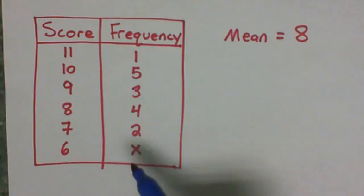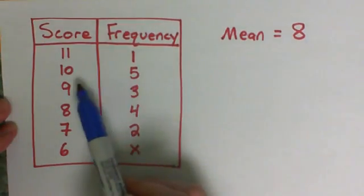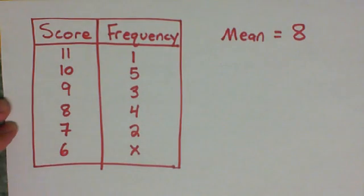This is called a missing value problem. Notice that I have an x here for the 6. So I know there's one 11, I know there's five 10s, three 9s, but I don't know how many 6s there are.